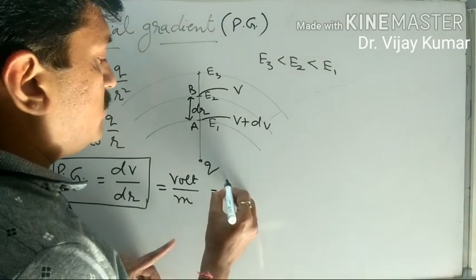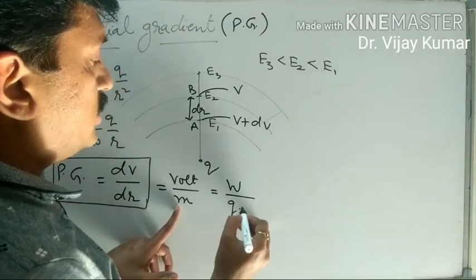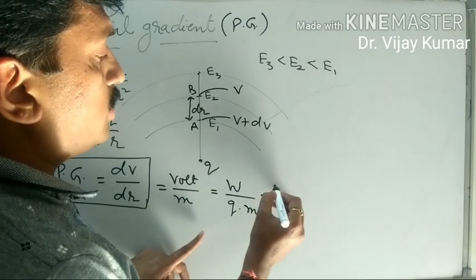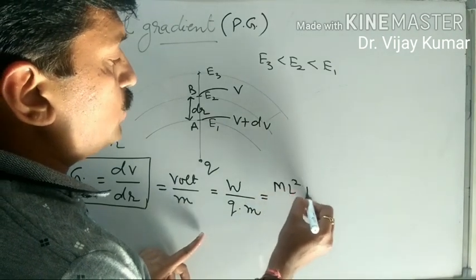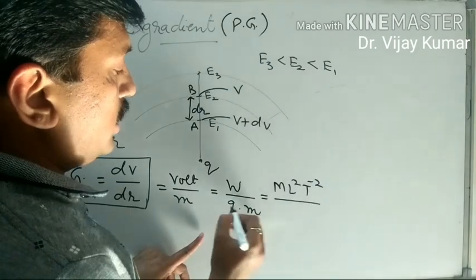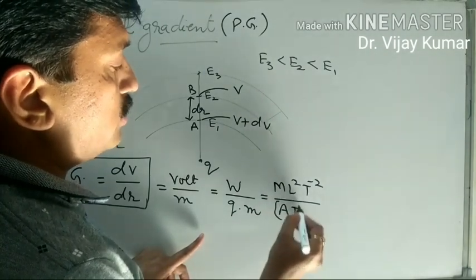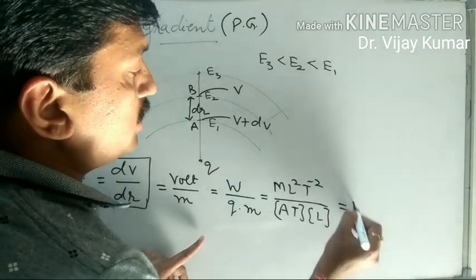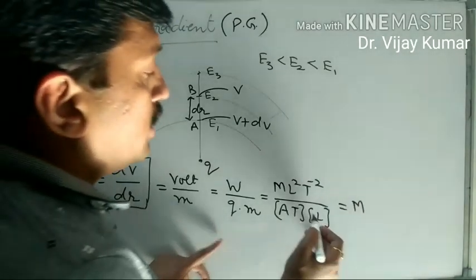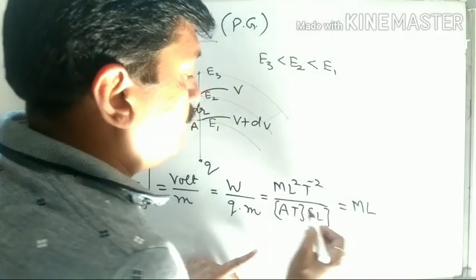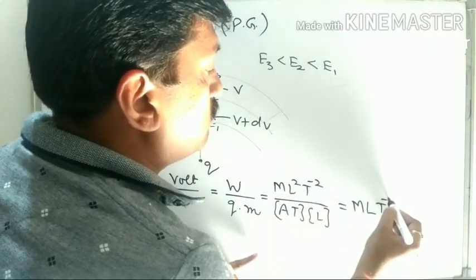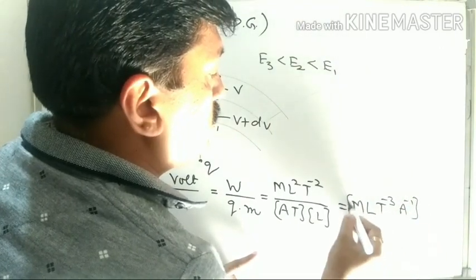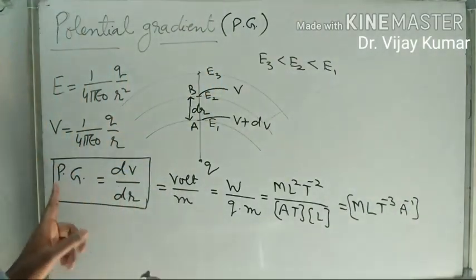We can also determine the dimensional formula of potential gradient. Potential means W upon Q, and this is over distance in meters. The dimension formula of work W is ML² T⁻², and charge Q has dimension AT. Distance has dimension L. So potential gradient becomes ML² upon L times AT, which simplifies to MLT⁻³ A⁻¹. This is the dimensional formula of potential gradient.